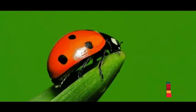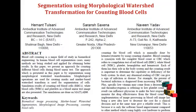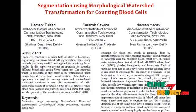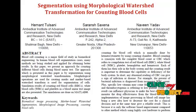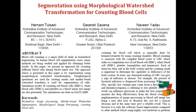Welcome to Plifniproject.com, where we discuss the project segmentation using morphological watershed transformation for counting blood cells. In this project, we propose the method to cluster and segment the blood cells. We use the blood tissue to count the white blood cells, red blood cells, and also calculate platelet values.